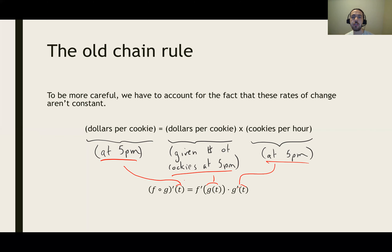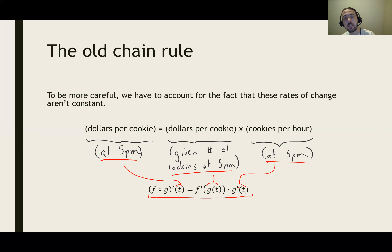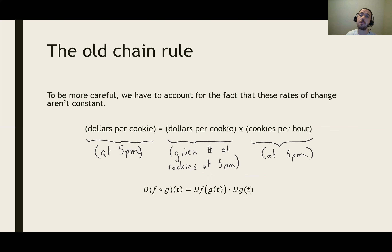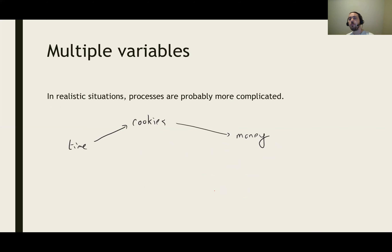You don't calculate the dollars per cookie at 5 p.m. — you calculate dollars per cookie depending on what you've done. So that gets boiled down to this familiar formula: f composed with g, prime at time t, is f prime of g at t times g prime of t. We can also use d-notation: d of f composed with g at time t is df of g of t times dg of t. That's just an alternative to the prime notation, but it's going to be more consistent with what we're going to see when we get to multiple variables.